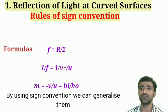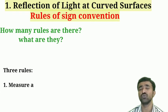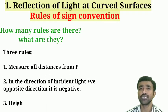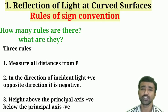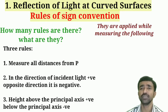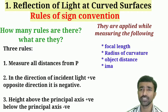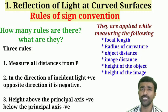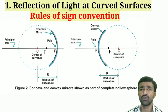That formula becomes universal with this conveying of sign. Generally, we have three sign convention rules when measuring different parameters related to spherical mirrors — whether concave or convex. The parameters are: focal length, radius of curvature, object distance, image distance, height of the object, and height of the image.